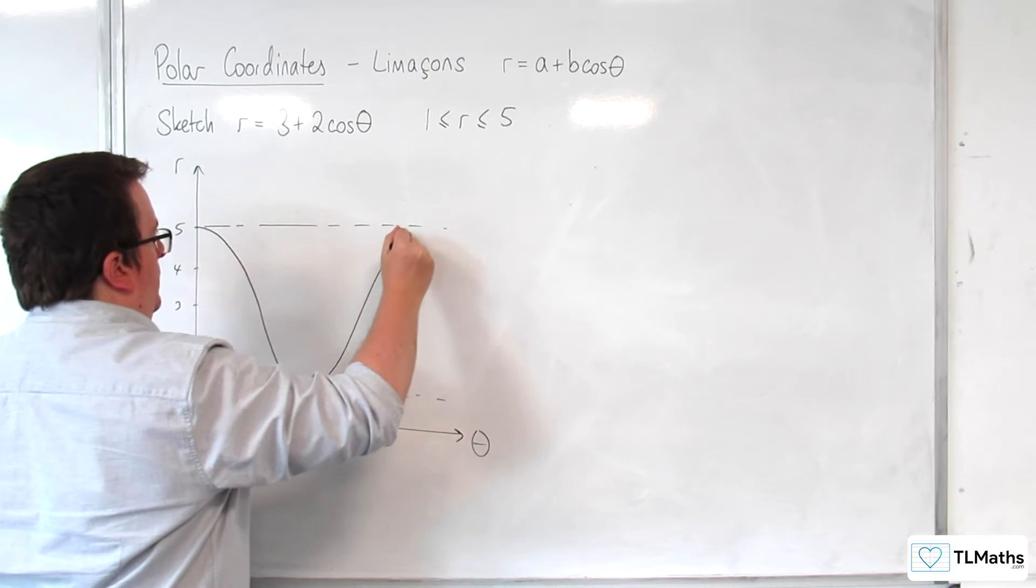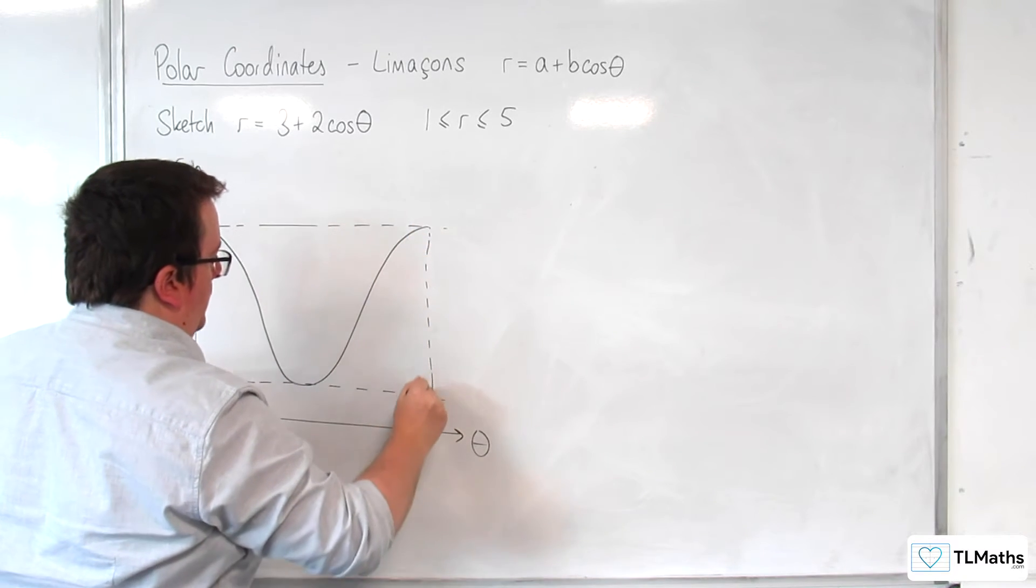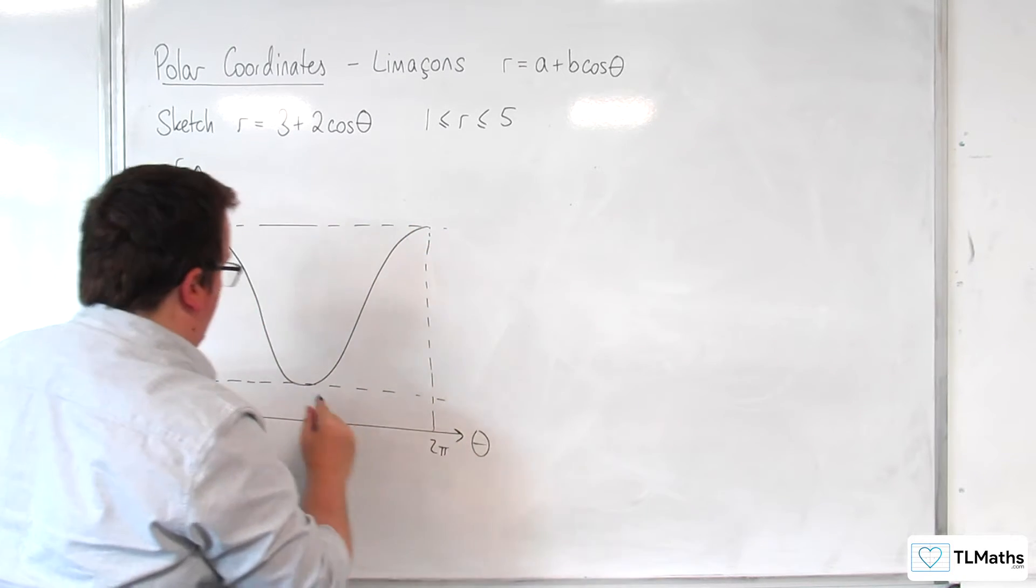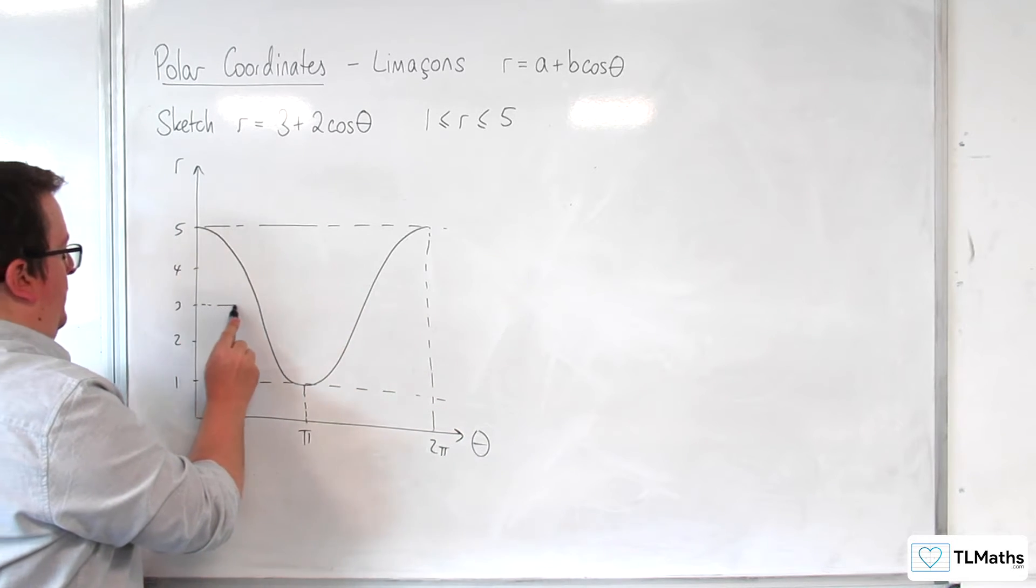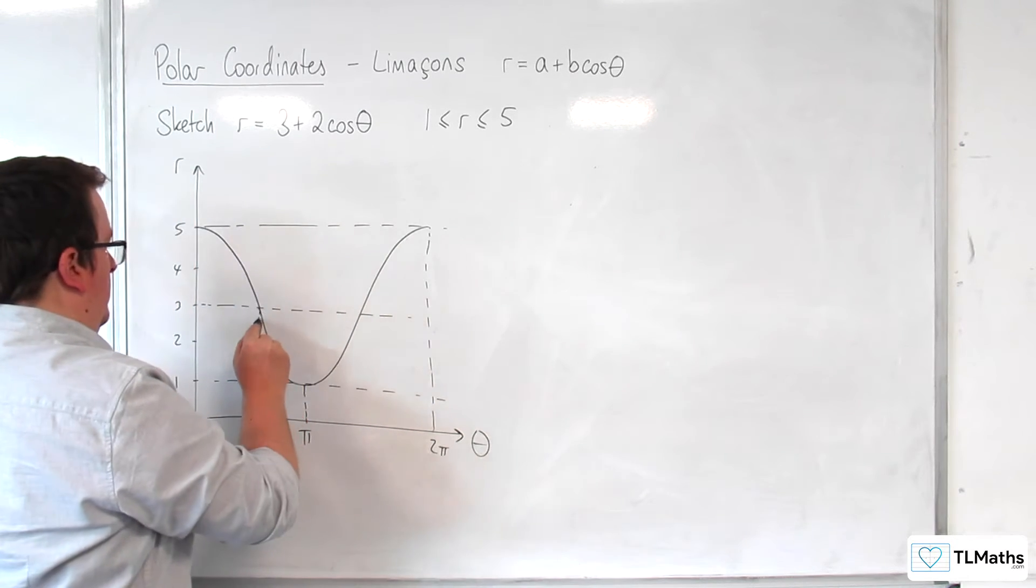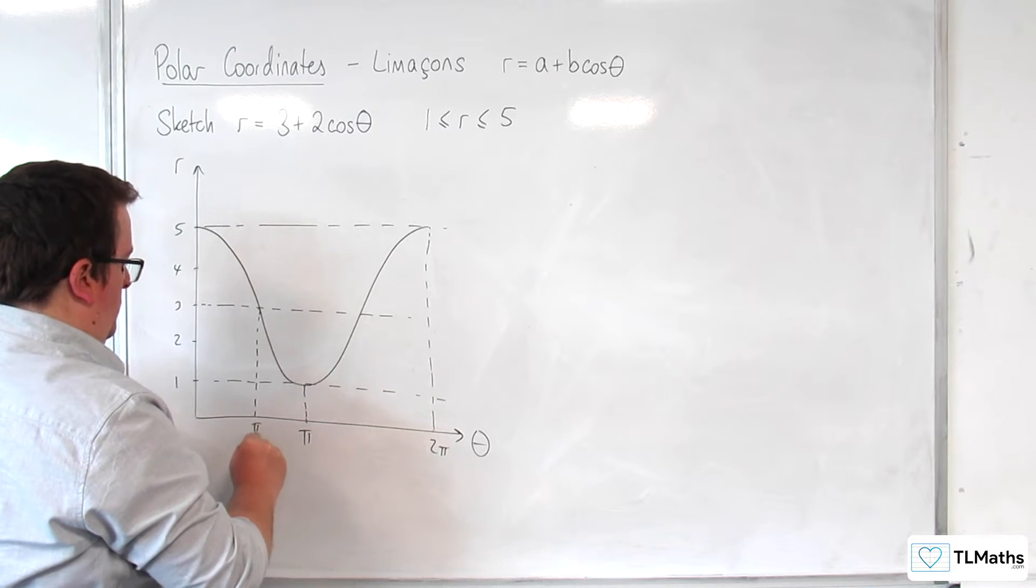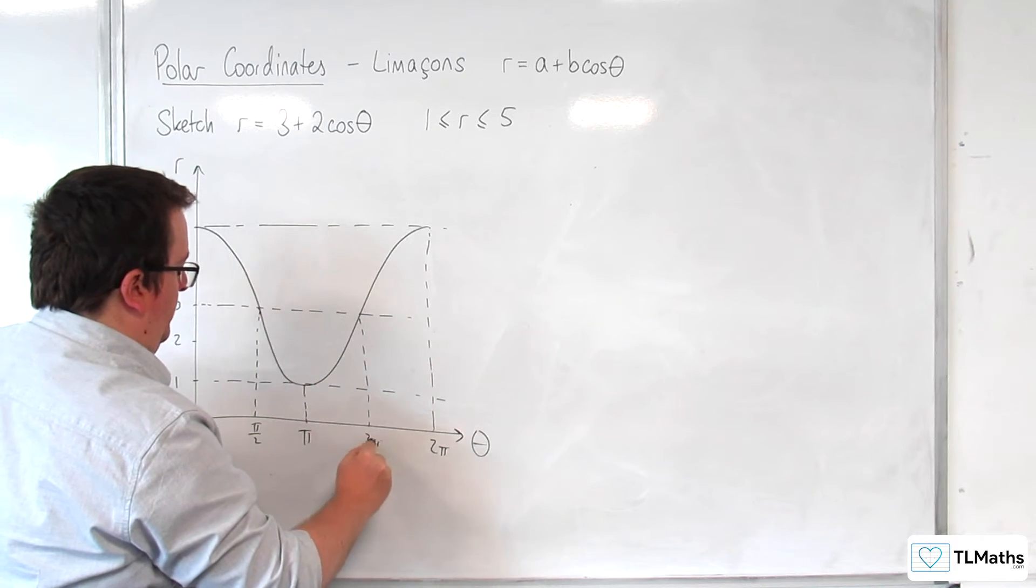So it looks something like this. So that's 2 pi, that's a pi, and the mid value is 3, so that's pi over 2, and that's 3 pi over 2.